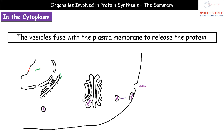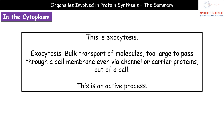Those little secretory vesicles are then going to be transported through our cytoskeleton to the plasma membrane itself. Once those secretory vesicles arrive at the plasma membrane, they fuse with it. Once they've fused, our little protein is then going to be released from the cell. Our little vesicle has come in, it's fused with the plasma membrane, and in doing so it's able to release the protein outside the cell. When we're talking about these proteins being released outside the cell by that fusing of the vesicle with the plasma membrane, we're referring to a process called exocytosis.